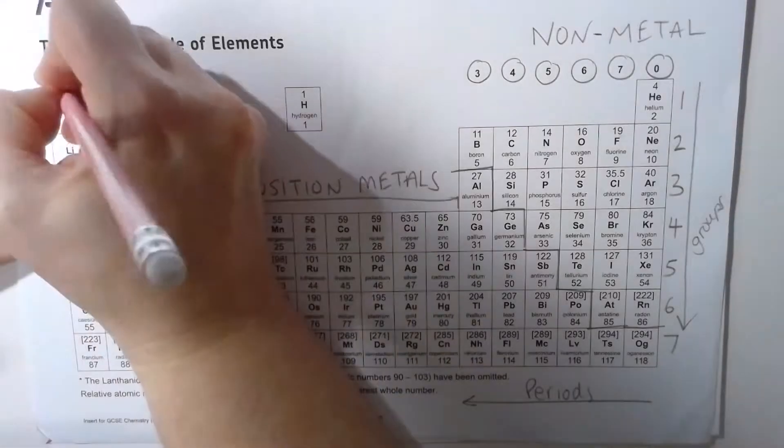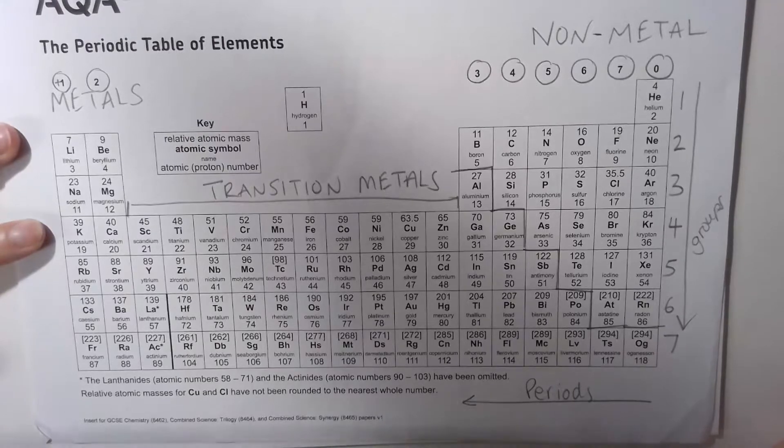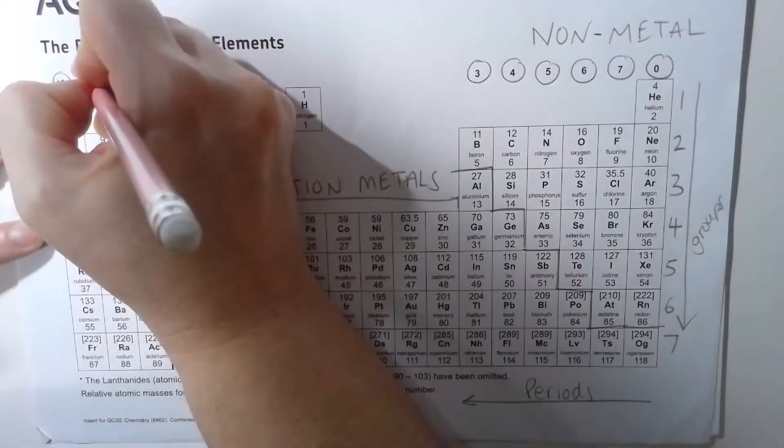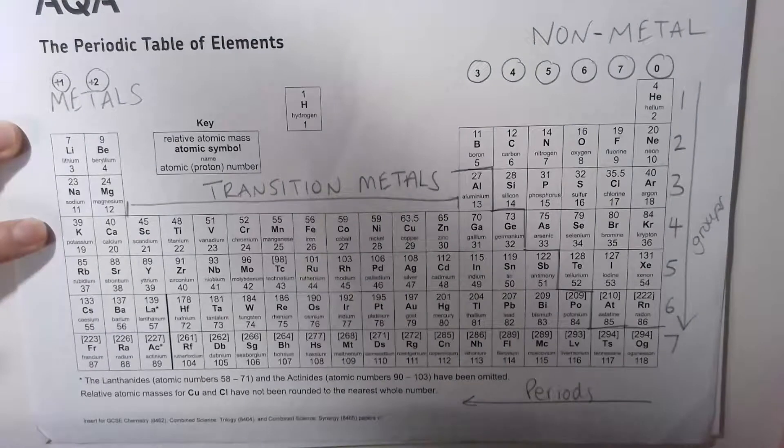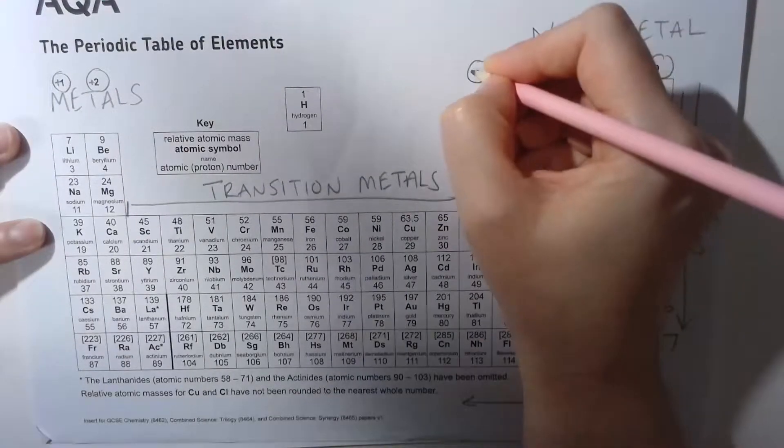When it becomes an ion, it is a plus one charge because it'll lose that one electron. Group two becomes plus two charges because they lose their two outer electrons. Group three becomes plus three charge.